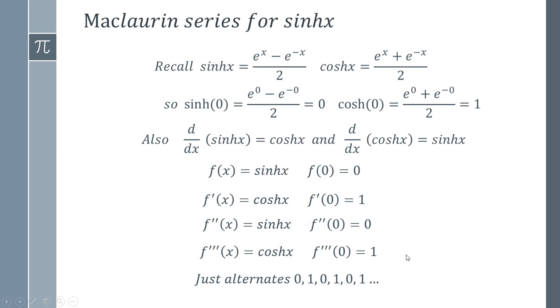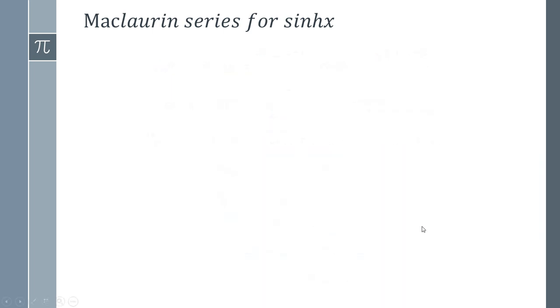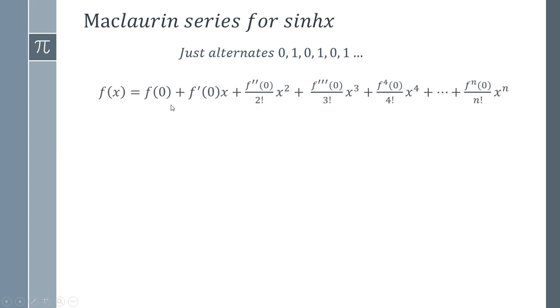We can start putting this together to get our full expression. We've realized and proved that the series is just alternating zero, one, zero, one, et cetera. We can write out our formula for the Maclaurin series.